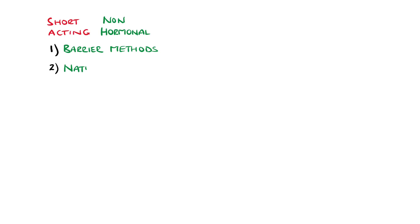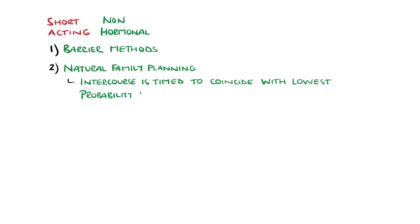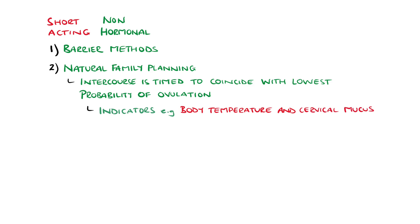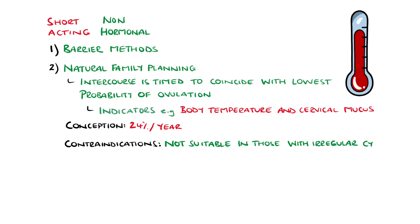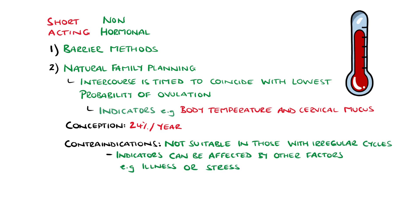Natural family planning is another option where intercourse is timed to coincide with the lowest likelihood of ovulation. It relies on indicators like body temperature and cervical mucus. The conception rate is 24% per year with this method. It is not suitable in those with irregular menstrual cycles, and markers of ovulation can be impacted by illness or stress.